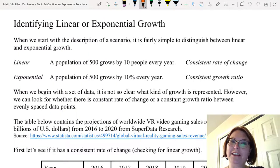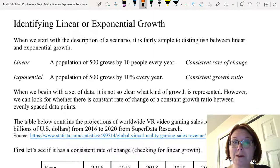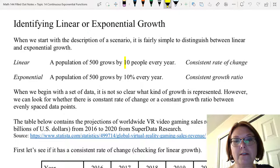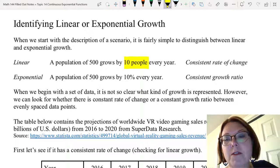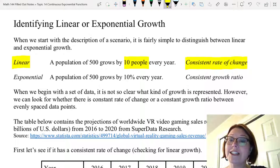In this video I want to talk about identifying linear or exponential growth. When we start with the description of a scenario, it's fairly simple to distinguish between linear and exponential growth as long as you're paying attention. So the first example here is linear growth. A population of 500 grows by 10 people every year, and so there's a finite quantity that is growing every year, and that produces a consistent rate of change—in other words, a consistent slope.